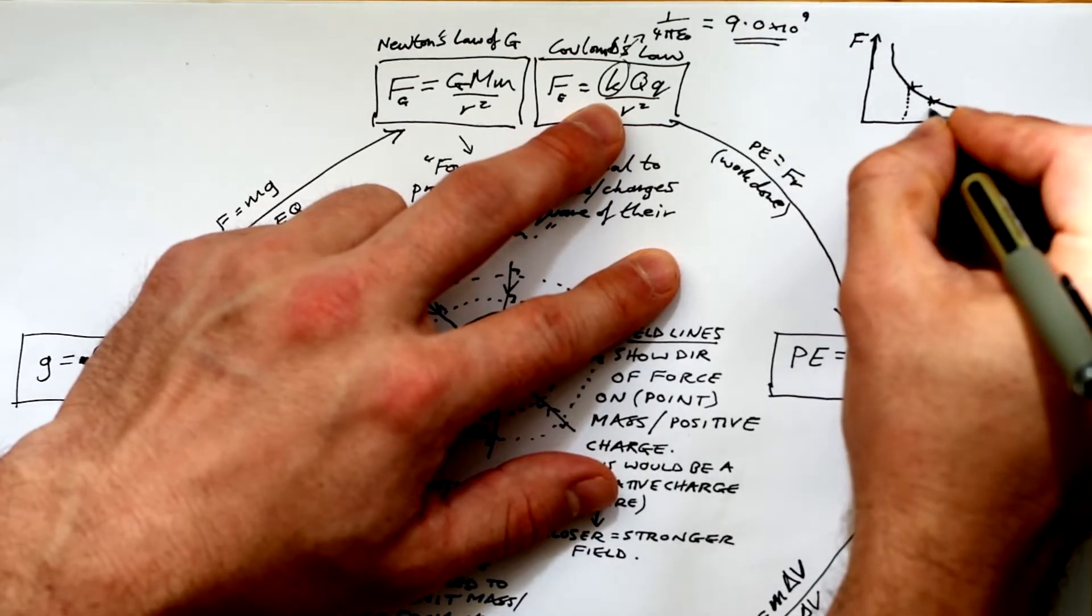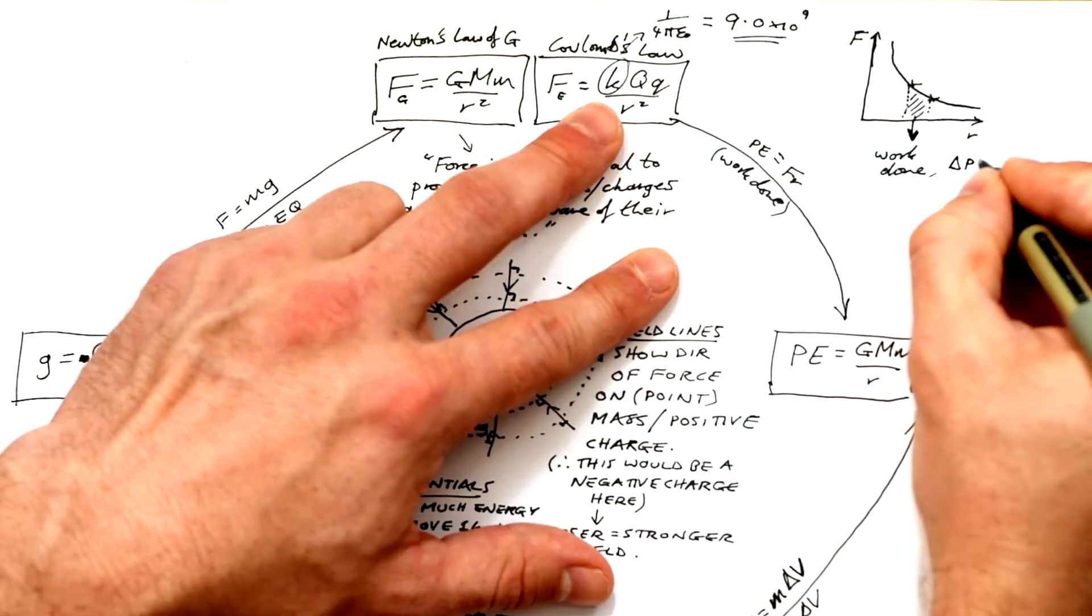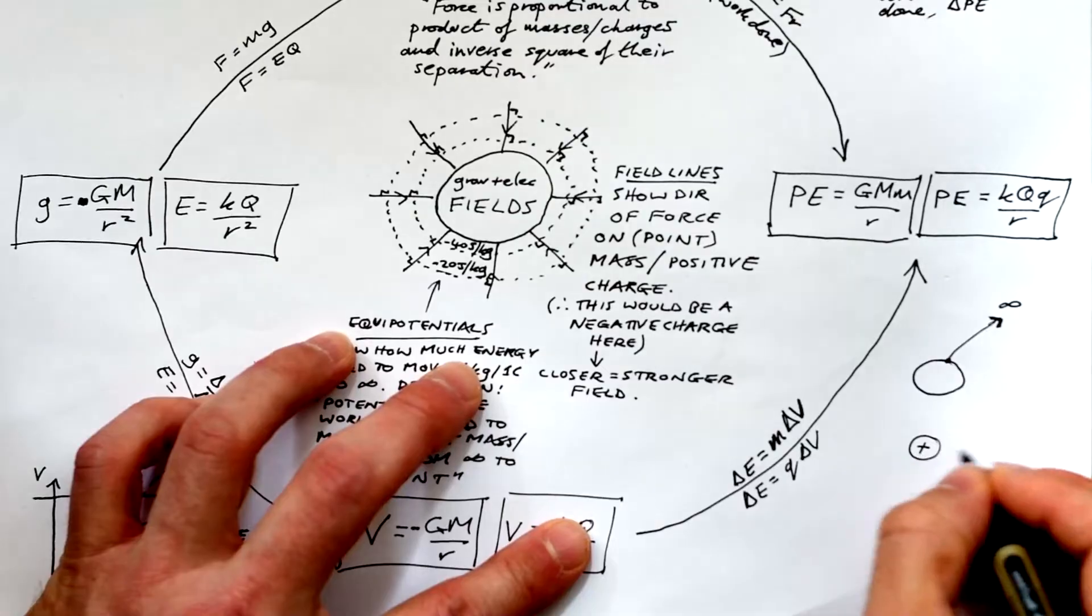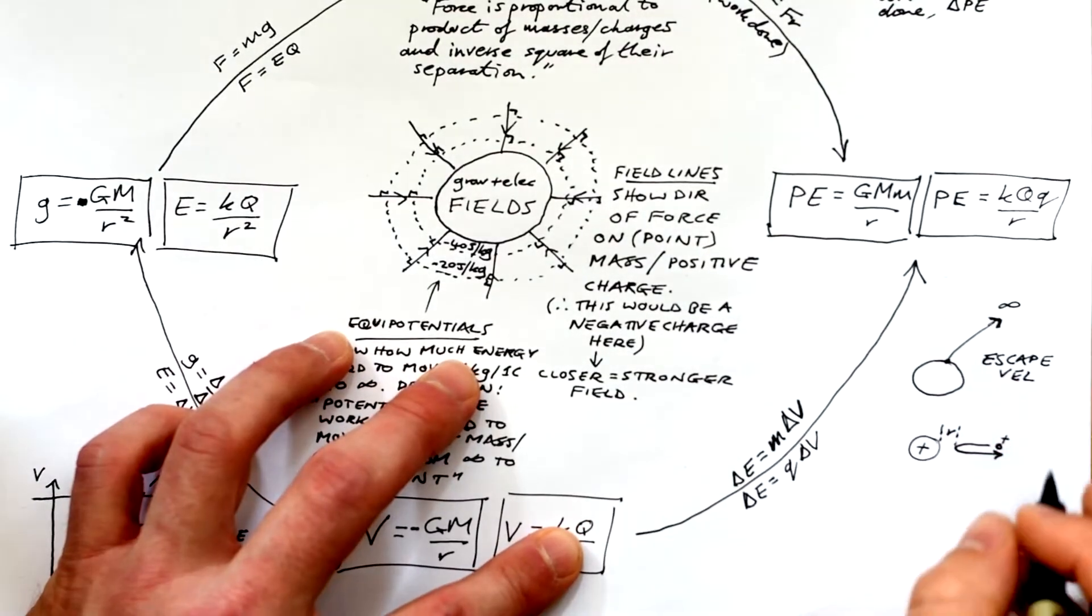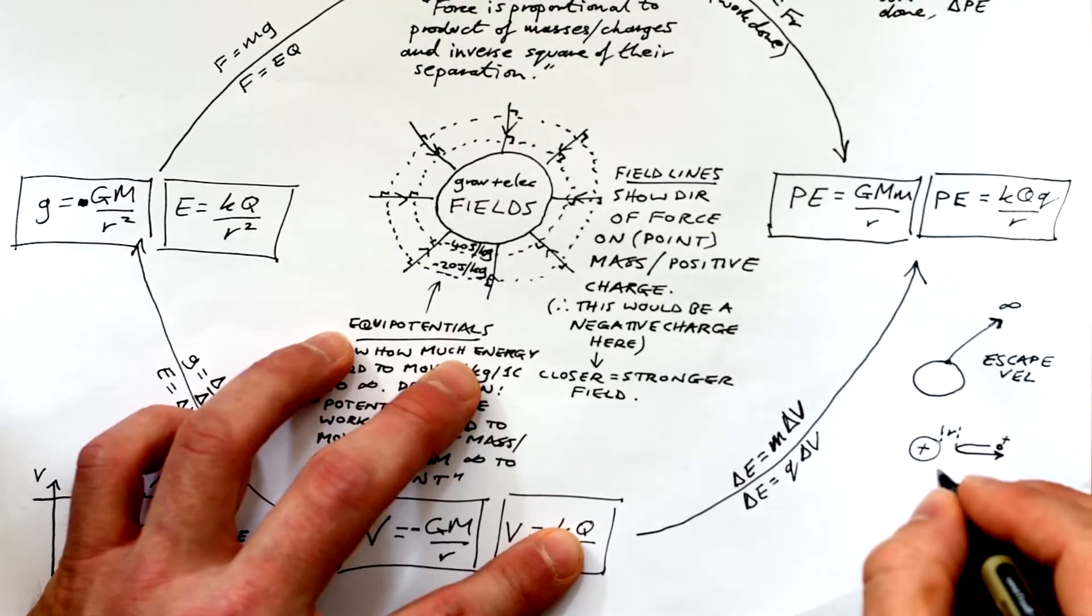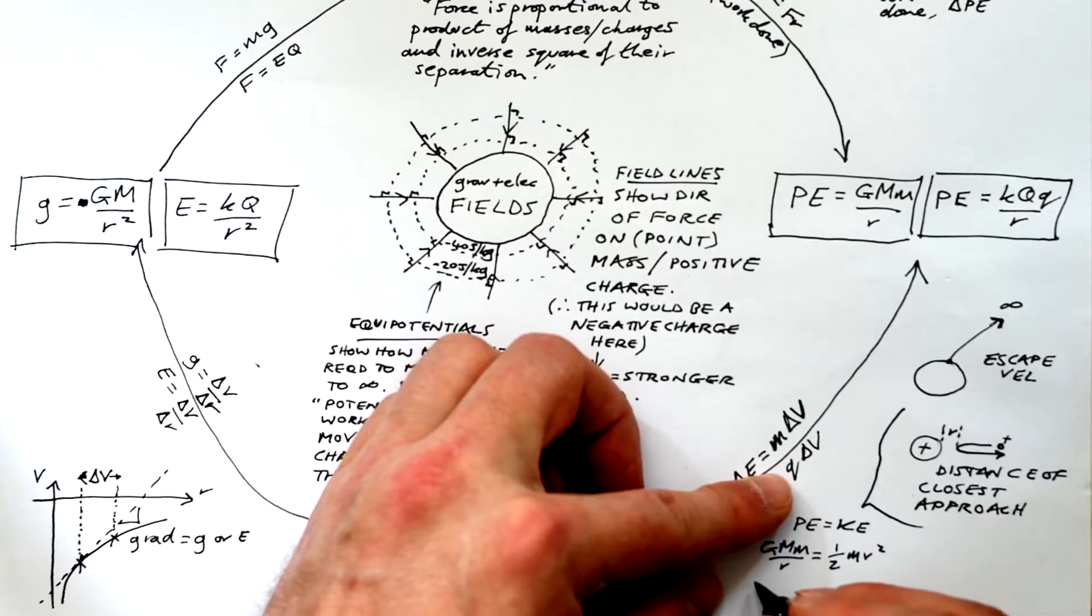If you have a graph of force against distance, the area under the graph is equal to work done. And that should give us the change in potential energy. Speaking of energy, we have two things here. Generally escape velocity is for gravitational fields and distance of closest approach is for two like charges. And in both cases, all we do is say the potential energy is equal to kinetic energy.